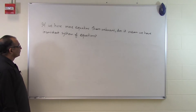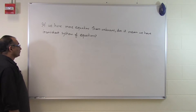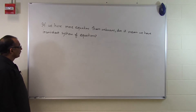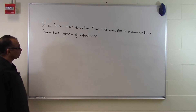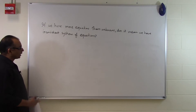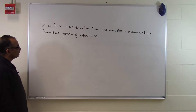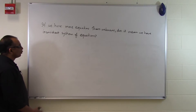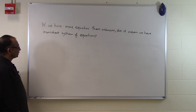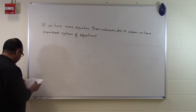In this segment we will answer the question that many times you might have more equations than unknowns or more unknowns than equations. Does that mean we have an inconsistent system? Most times people think that whenever you are given simultaneous linear equations you have n equations and n unknowns. But that's not necessarily the case. You could have more unknowns than equations or more equations than unknowns. The categorical answer is no — it doesn't always mean inconsistency. Let's take some examples and see what happens.